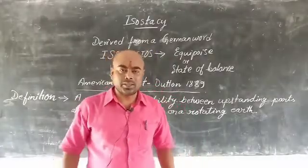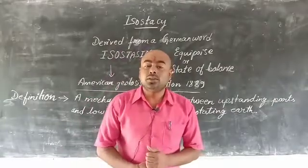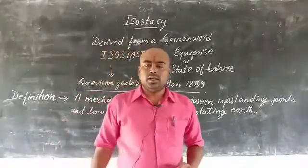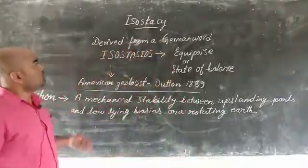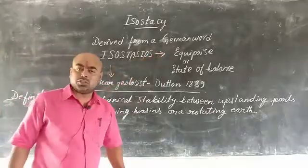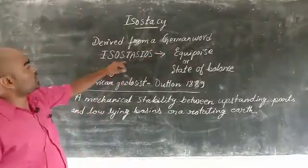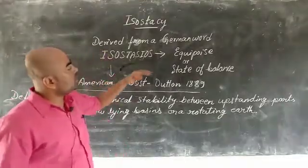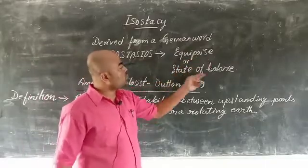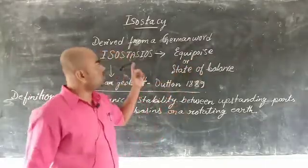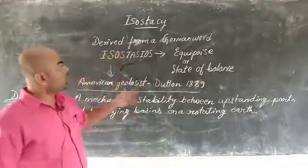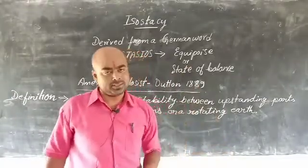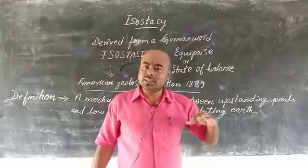Hello, my dear students, welcome to the class. Today we are here with a new topic: isostasy. What is isostasy? Isostasy is derived from a Greek word, 'isostasius', which means equipoise or state of balance — the state of balance of the earth.